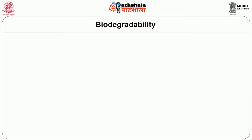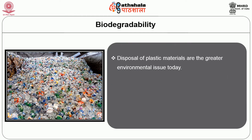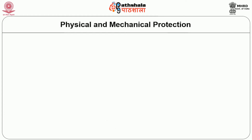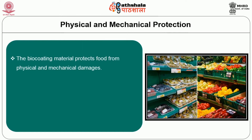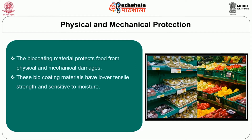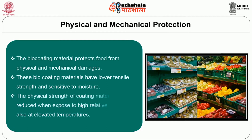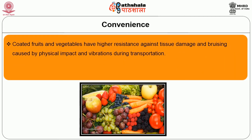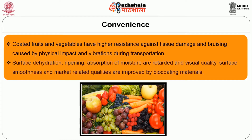The next important benefit is biodegradability. Disposal of plastic materials is a major environmental issue today, and biodegradable materials offer one solution. Biopolymers, plasticizers, and other additive materials are biodegradable and environmentally friendly. The next benefit is physical and mechanical protection. Biocoating materials protect food from physical and mechanical damages, though they have lower tensile strength and are sensitive to moisture, with physical strength reduced at high relative humidity and elevated temperatures. Next is convenience. Coated fruits and vegetables have higher resistance against tissue damage and bruising caused by physical impact and vibration during transportation, with surface dehydration and ripening retarded and visual quality improved.